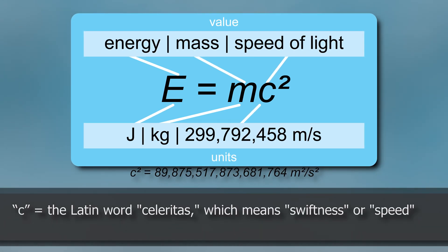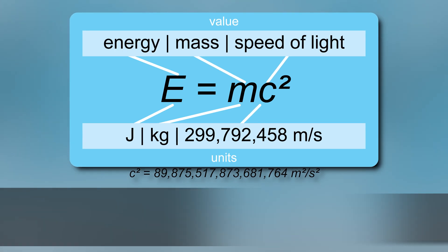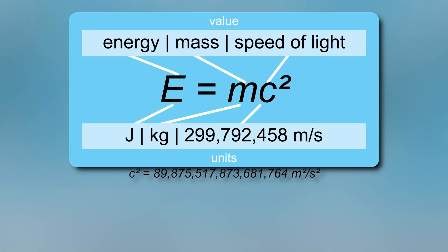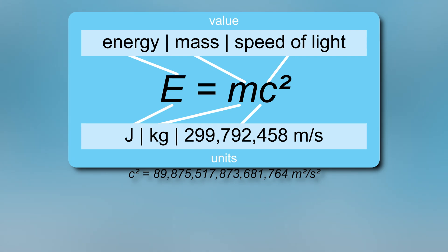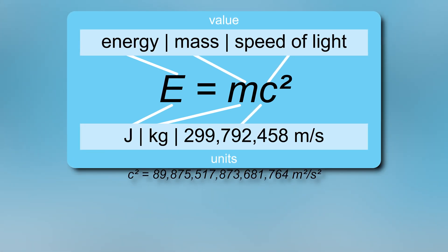The C represents the Latin word celeritas, which means swiftness or speed.